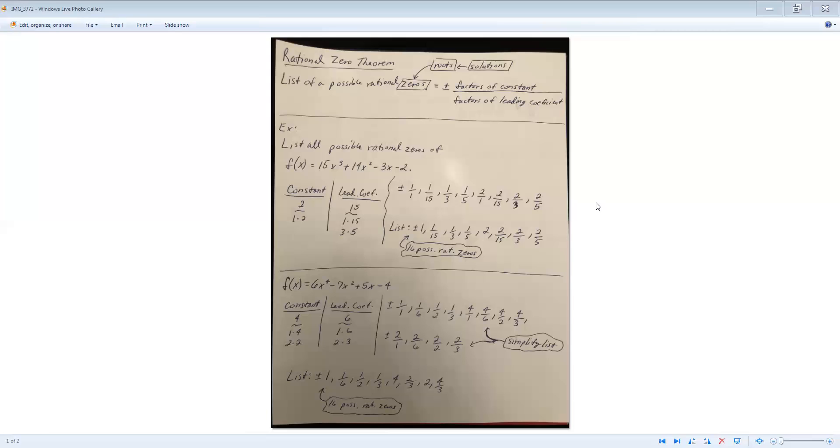And so what we would do here if we wanted to figure out if either one of these are solutions or not, I would take 1, take positive 1, plug it into my equation. If I get 0, then that means that's a solution or a zero of the function. If not, then it's not. So I knock out positive 1, then I would try negative 1, then I would try positive 1/6, then I would try negative 1/6. So I would keep trying until I get to the end of my list or I get the desired amount of solutions possible.